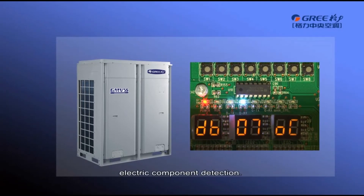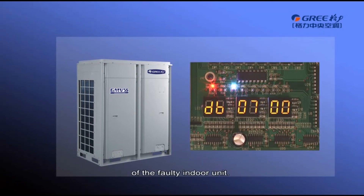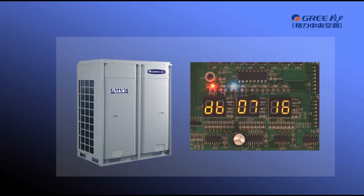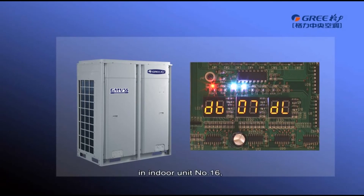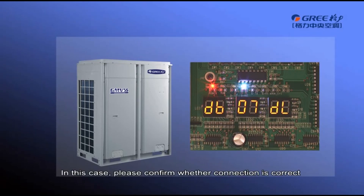Step 7 is indoor unit electric component detection. If the detection is abnormal, the unit retains the current status. LED 3 displays the 4-digit project number of the indoor unit, and the corresponding error code will be displayed after 3 seconds. For example, if an ABN temperature sensor error occurs in indoor unit number 16, LED 3 will display 00, then display 16, and then display error code DL. In this case, please confirm whether the connection is correct and replace the sensor until the error disappears.